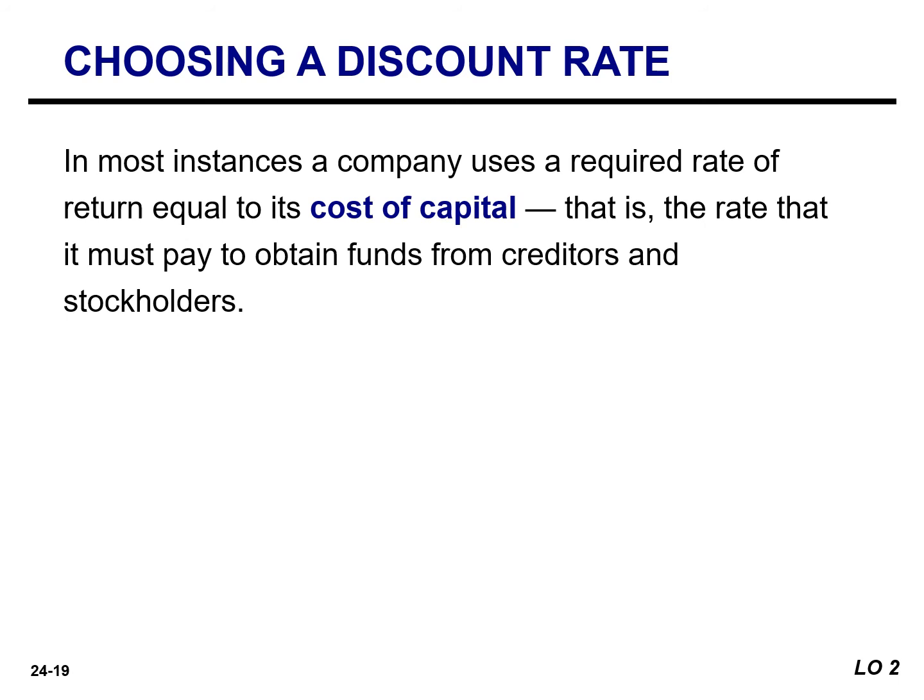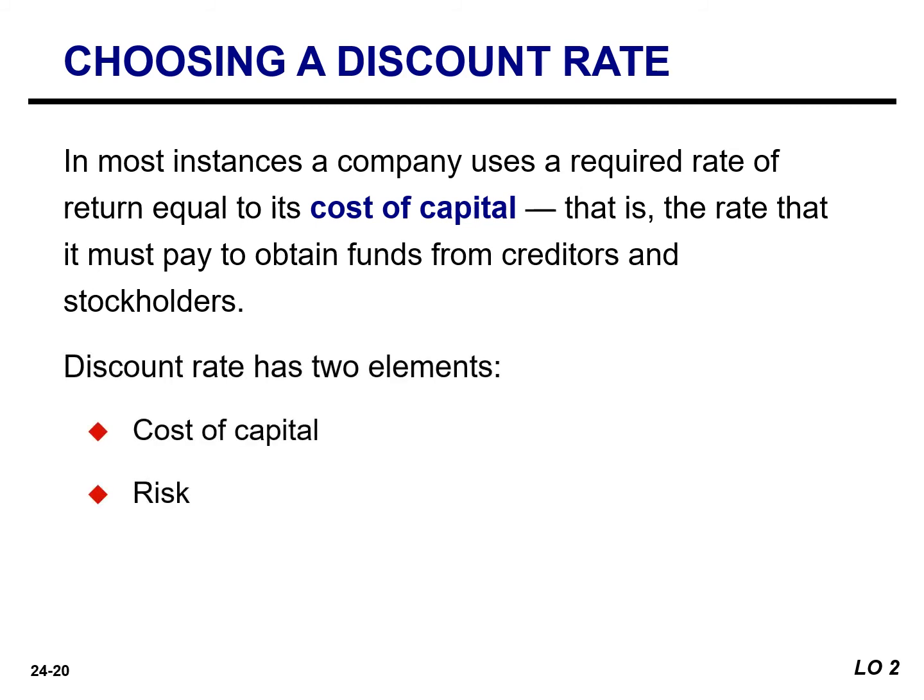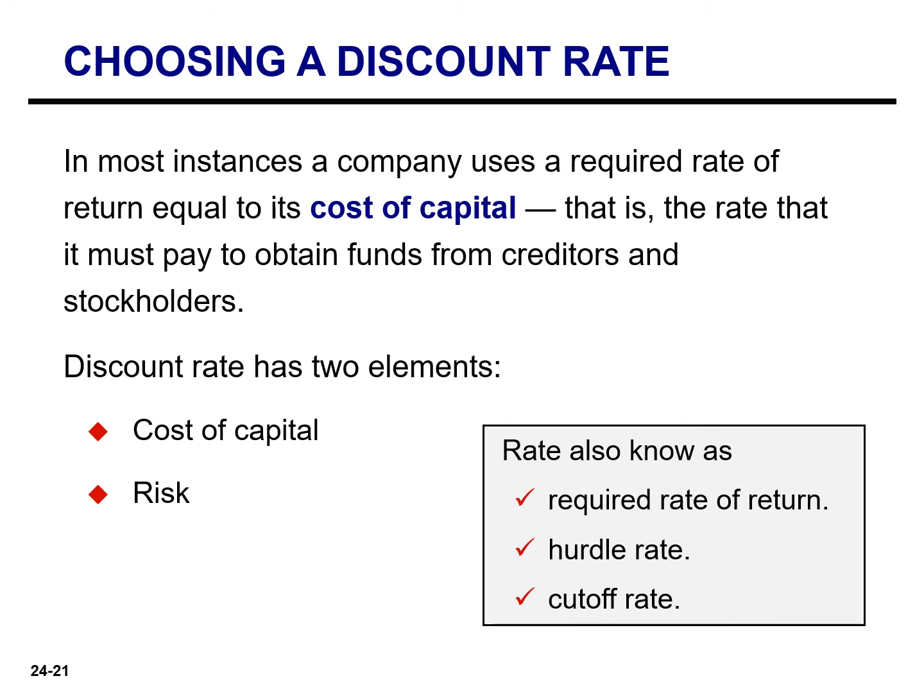In most instances, a company uses a required rate of return equal to its cost of capital — the rate it must pay to obtain funds from creditors and stockholders. If management believes a project is riskier than the company's usual line of business, the discount rate should be increased. The discount rate has two elements: a cost of capital element and a risk element, though companies often assume the risk element is zero. The discount rate is also referred to as the required rate of return, the hurdle rate, and the cutoff rate.